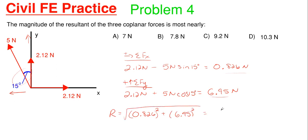And what we end up with is 6.999 Newtons, which it says most nearly, so that would be very close to 7 Newtons. So the answer would be A, and that's how you would solve that particular FE practice problem.